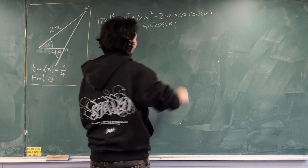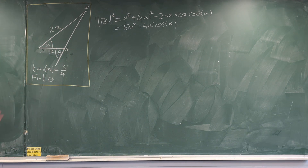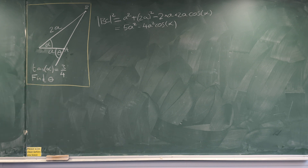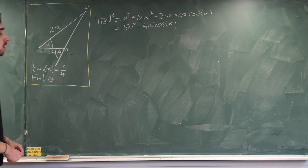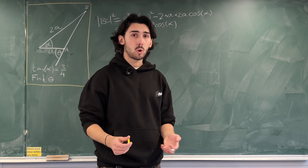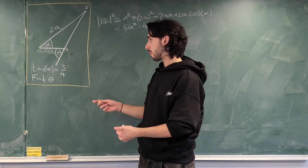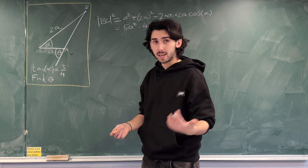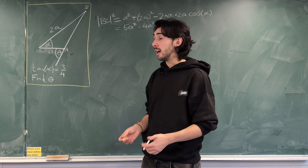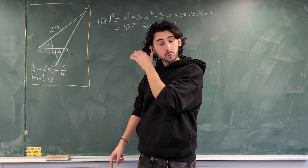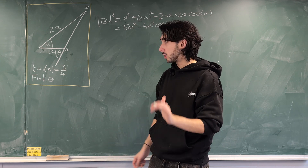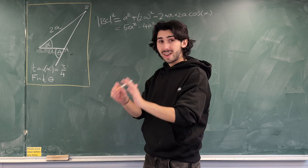Let's work out cos alpha. You can do this whole question without a calculator. In general, if you get given one trig ratio — like tan alpha equals 3 quarters — you can always find the other two: sine alpha and cos alpha, without a calculator.